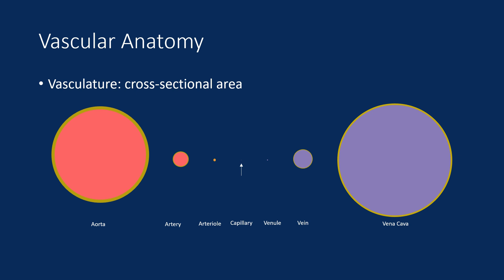The relative cross-sectional area of each vessel type is only part of the story — we also need to consider the relative numbers of each type. There is one aorta, many arteries, many more arterioles, and millions upon millions of capillaries, which perfuse every organ and every tissue, supplying nutrients and picking up waste. These drain into very many venules, which drain into many veins, which drain into the two vena cavae — superior and inferior — and then back to the heart.